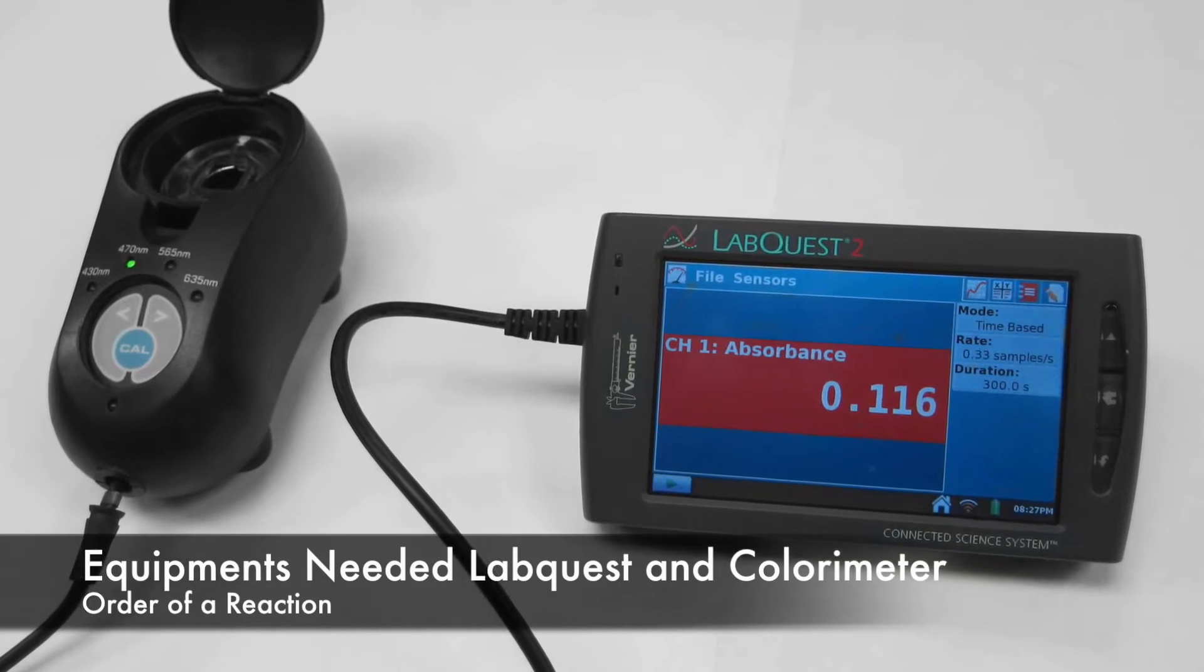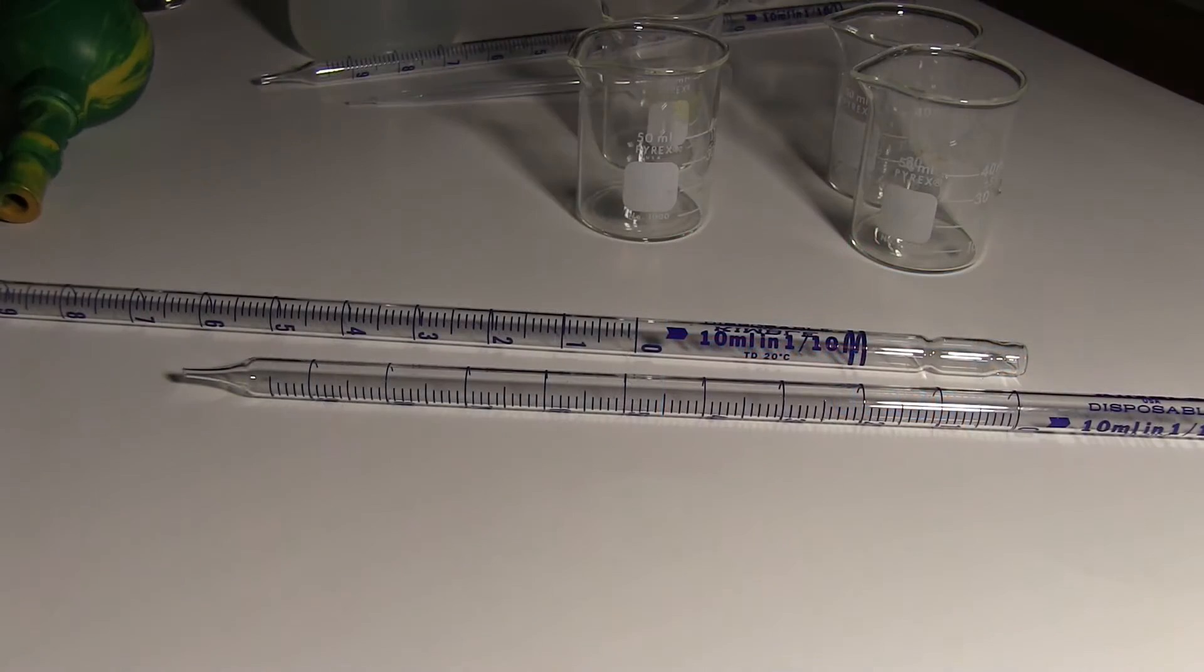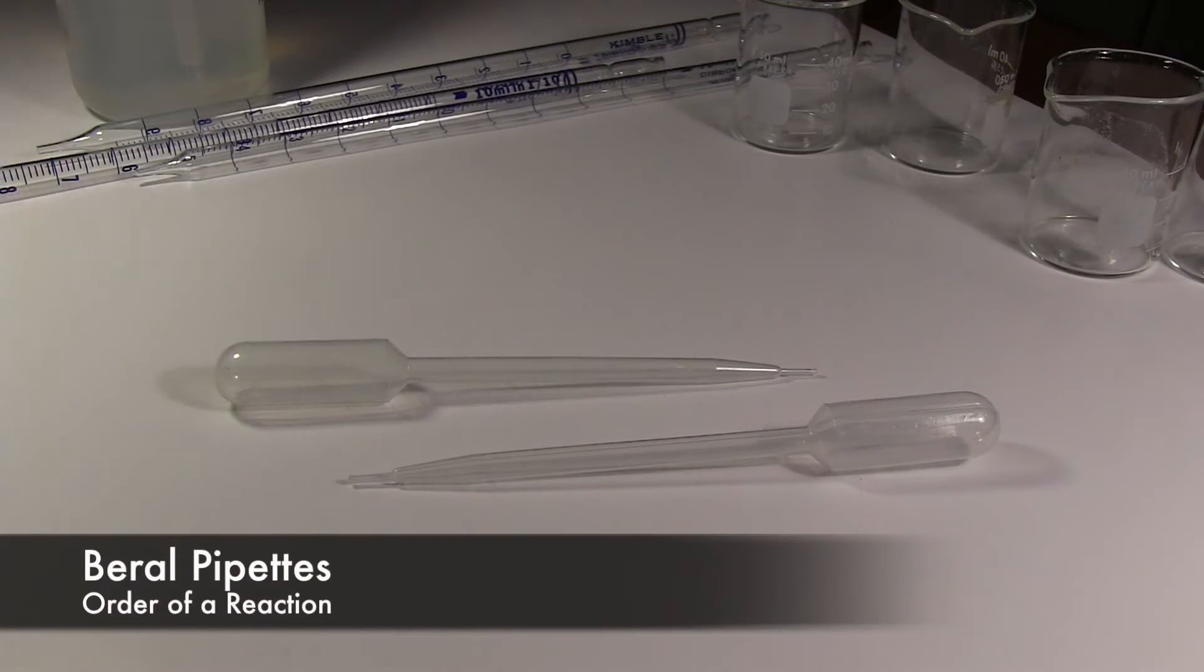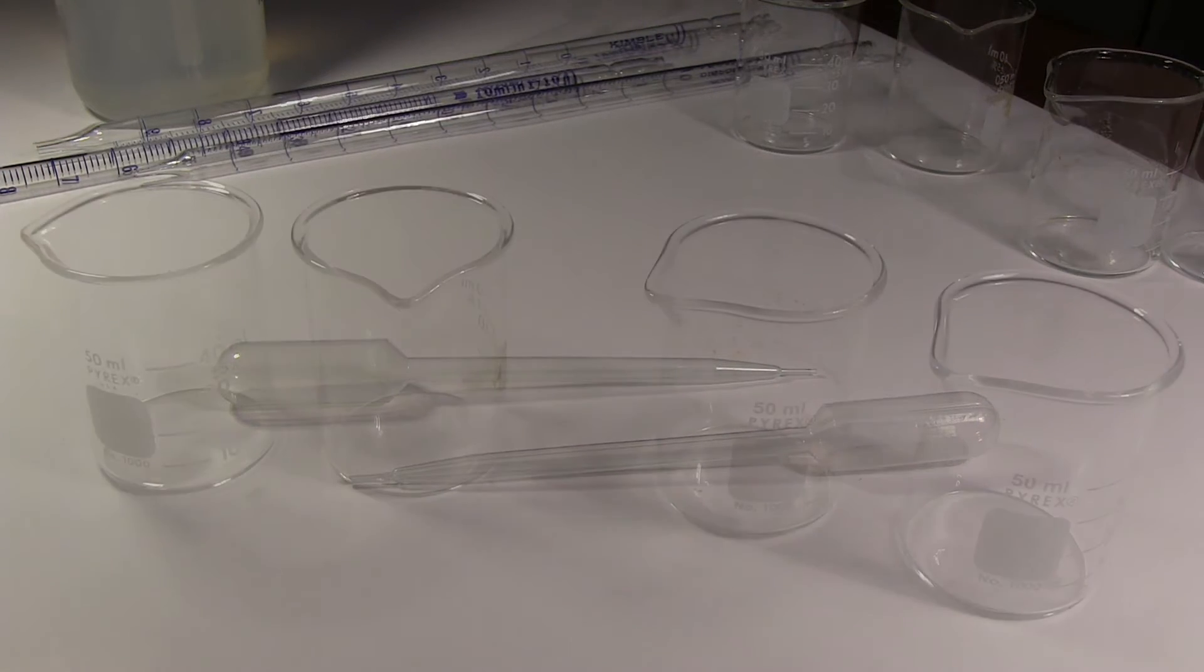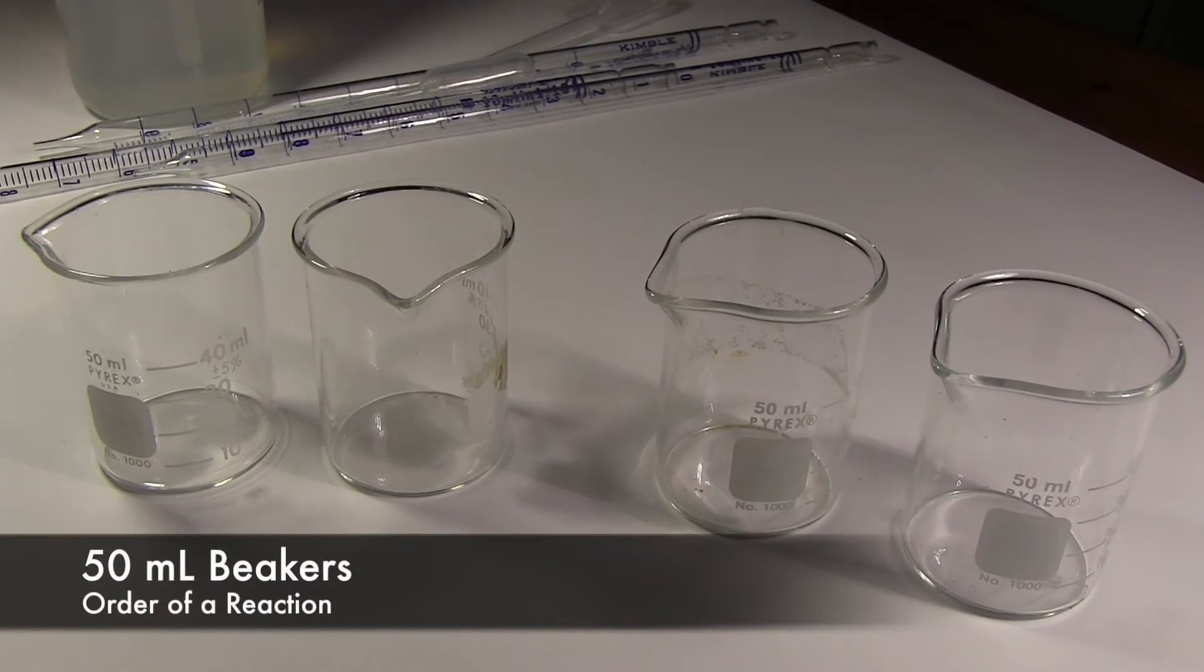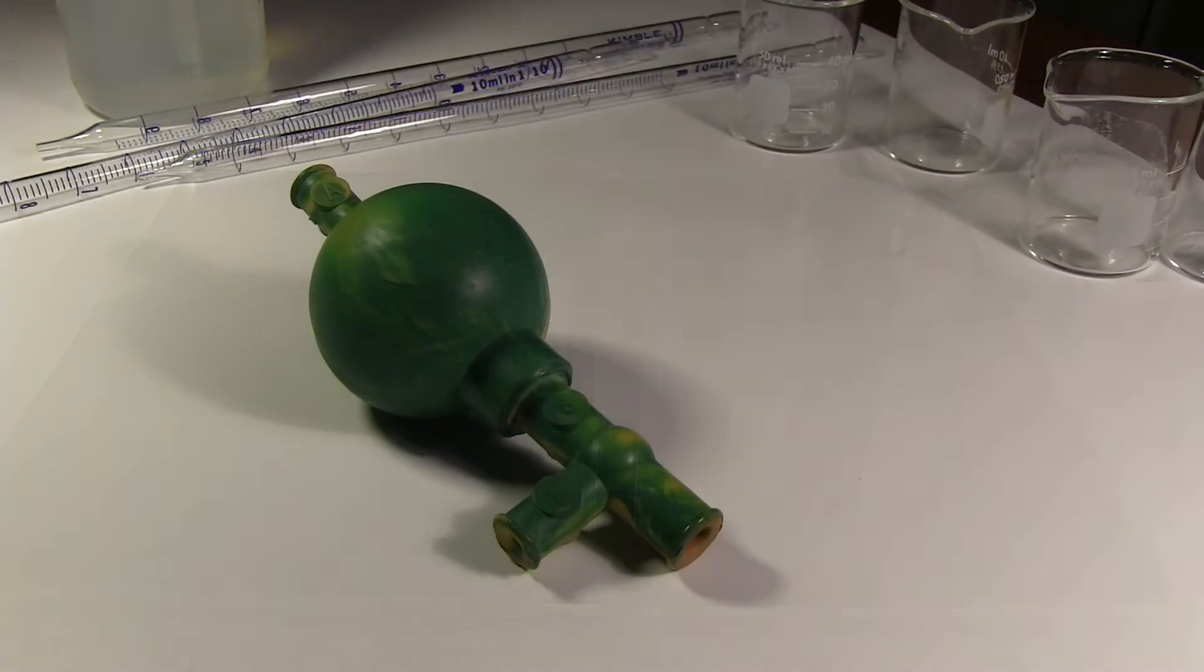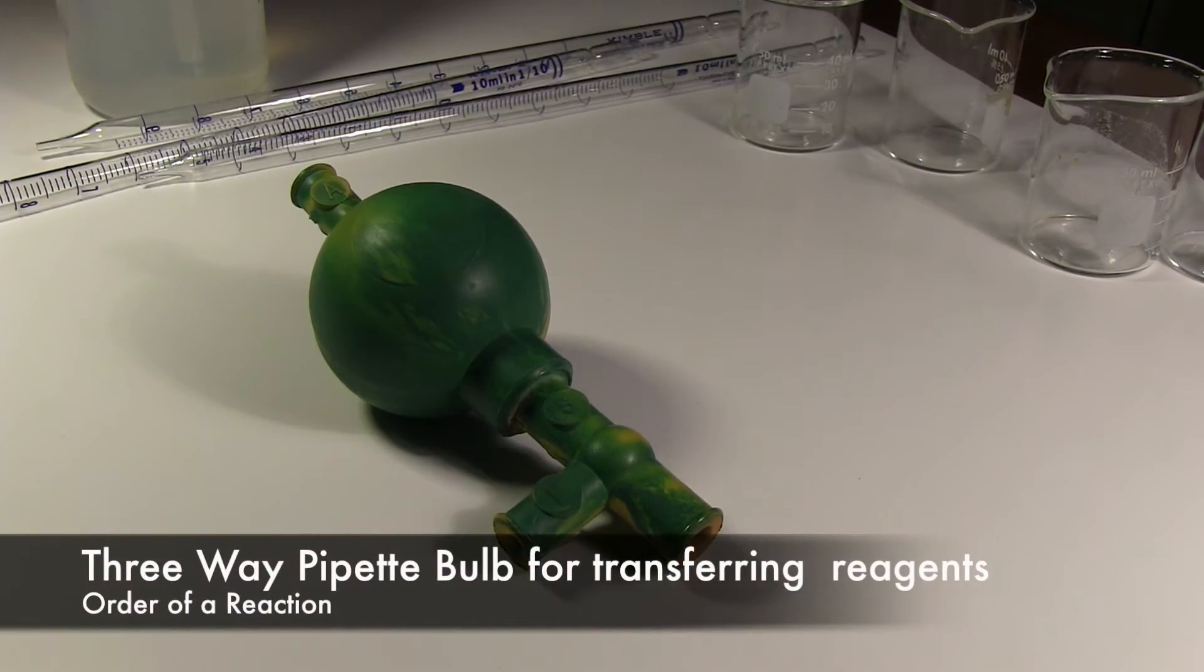Equipment needed are LabQuest and colorimeter from Vernier, graduated dropper pipettes, beryl pipettes, 50 milliliter beakers, cuvette for the colorimeter, and 3-way pipette bulb for measuring and transferring reagents.